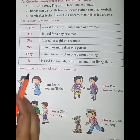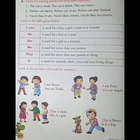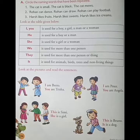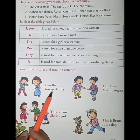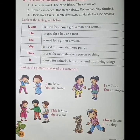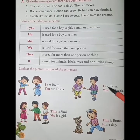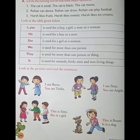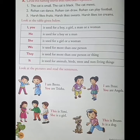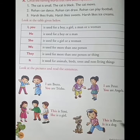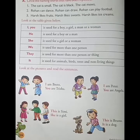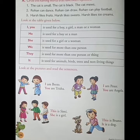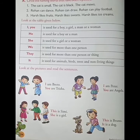Now look at the pictures and read the sentences. 'I am Bretto. You are Trisha.' — Mein Bretto hoon, aap Trisha ho. 'I am Peter. You are Angela.' — Mein Peter hoon, tum Angela ho. 'This is Simi. She is a girl.' — Ye Simi hai, ye ek ladki hai. 'This is Bruno. It is a dog.' — Ye Bruno hai, ye ek kutta hai. So I, you, she, and it are all pronouns.